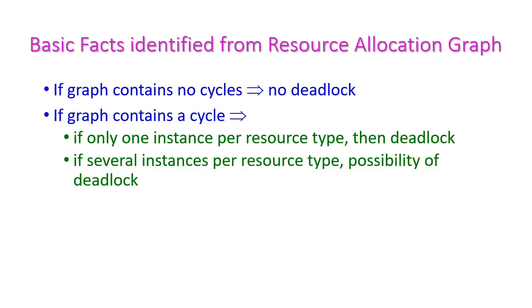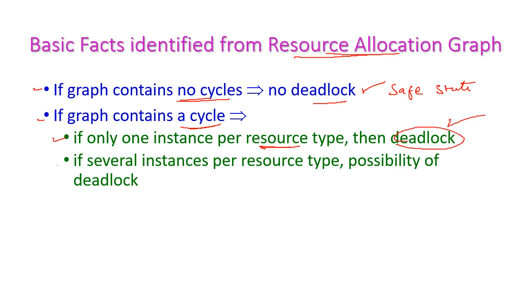The basic facts identified from this resource allocation graph are: if the graph contains no cycle, then there will not be any deadlock — the system is in a safe state. If the graph contains a cycle and there is only one instance per resource type, then there will definitely be a deadlock. If there are several instances per resource type, then the possibility of deadlock may be there — the system may be in an unsafe state.